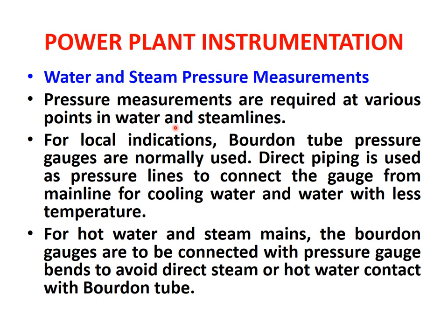For local indications, Bourdon tube pressure gauges are normally used. Direct piping is used as pressure lines to connect the gauge from the main line. For cooling water and water with lower temperature, the Bourdon tube pressure gauge is directly installed on the pipeline — no extra accessories are required.